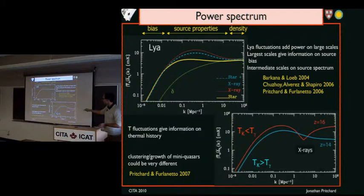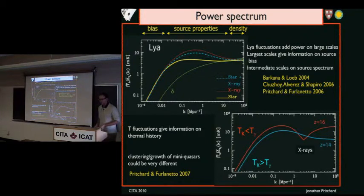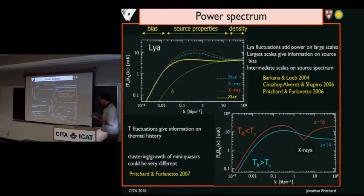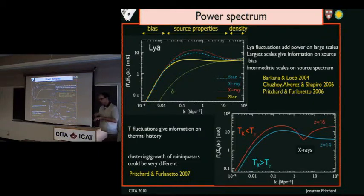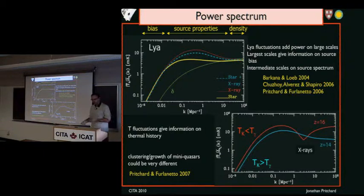Adding in Lyman-alpha fluctuations gives you extra power on top of the density field. On large scales you're learning about the clustering of the sources. On small scales, the density field. On intermediate scales, you're learning about the emission properties of the galaxies themselves — the frequency spectrum-like behavior. The same is true of X-ray sources, with one difference: it matters whether you're looking at the signal in absorption or emission. If you're in absorption and you heat the gas, that region becomes closer to the CMB temperature, giving a weaker absorption signal. If it's emission and you heat it, the temperature is further from the CMB temperature, giving a stronger emission signal. So there's a sign difference, depending on whether sources track galaxies or the growth of black holes.